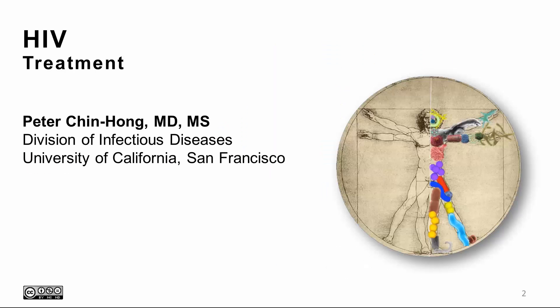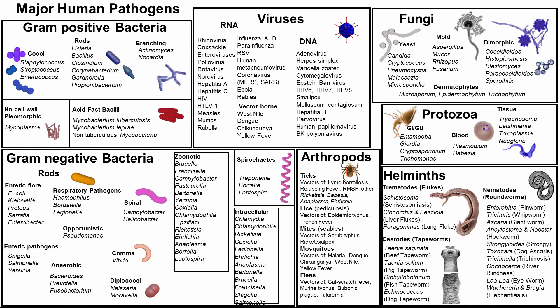Hi, my name is Peter Chin Hung, and I'm an infectious disease physician and faculty member at UCSF. In this module we will speak about HIV treatment. Here is our favorite pathogen map that you all know very well, with a whole host of my favorite organisms, including the subject of this module, which is HIV.